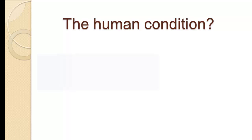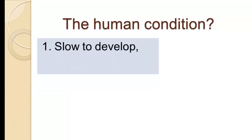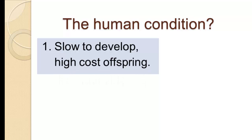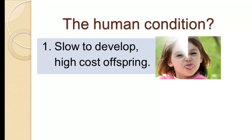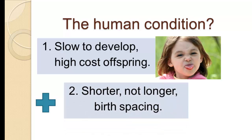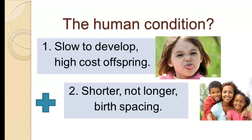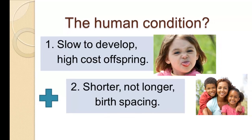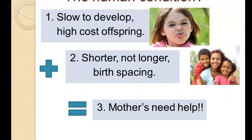The human condition is a little different. Humans produce very slow-to-develop, high-cost offspring. If females take over the whole cost of caring for offspring, their reproductive costs are much higher than males. In addition, we find in humans shorter — not longer — birth spacing than in closely related primates. The puzzle is that human mothers seem to produce more offspring than they can possibly care for.